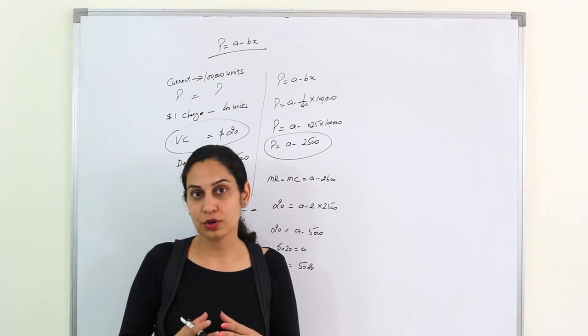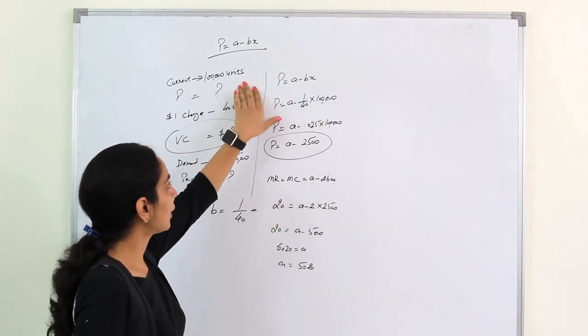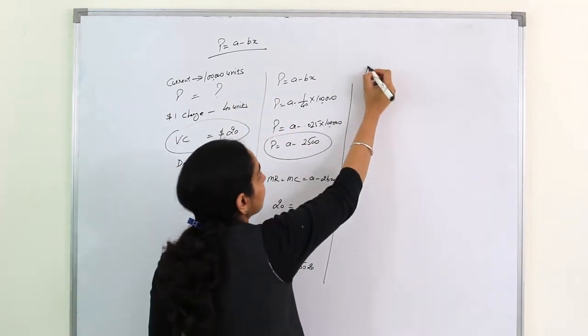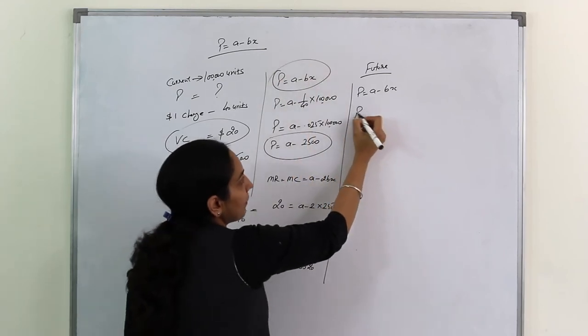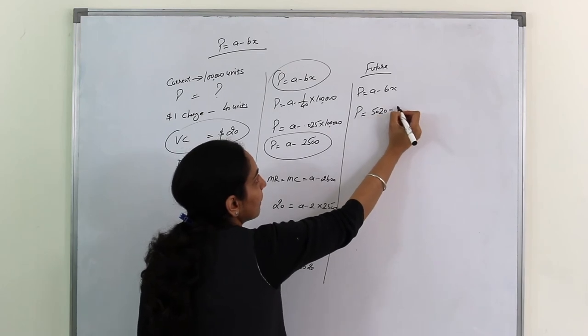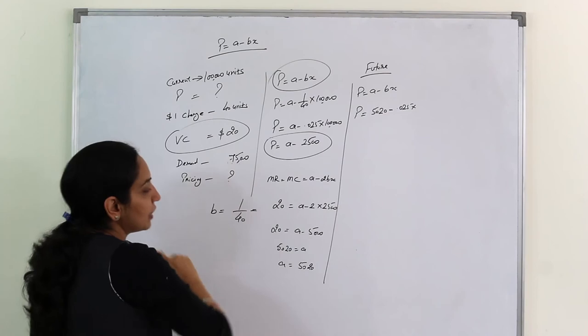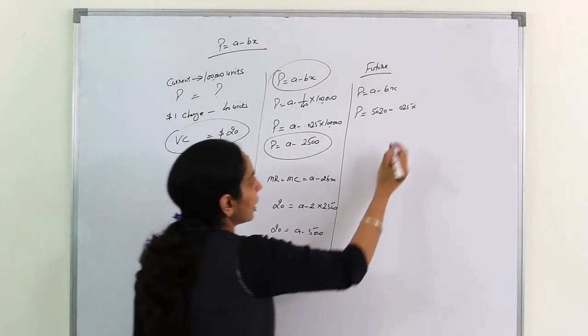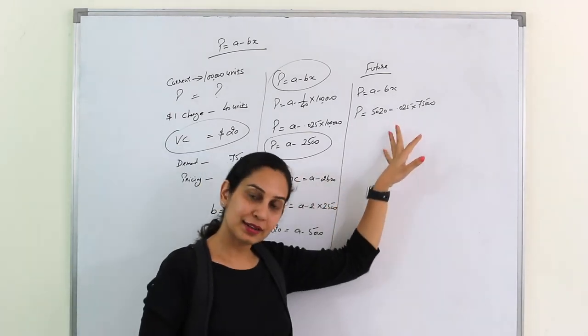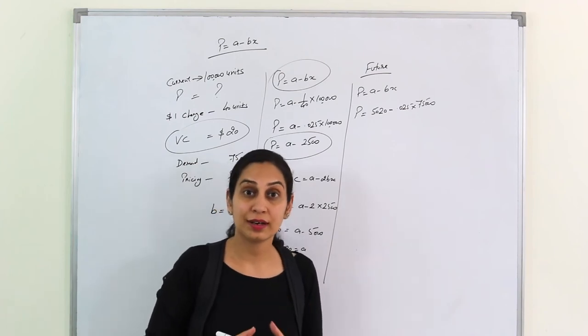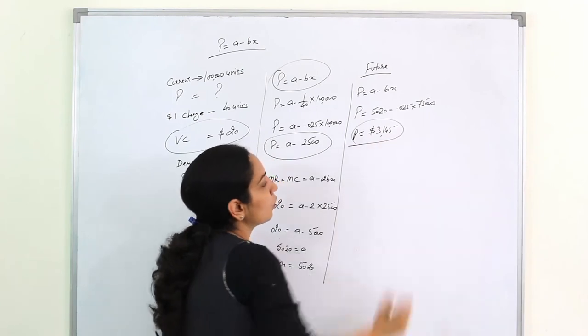You know that A and B are constants. So when you calculate future demand and supply, A is already there, B is already there, and they will remain same. Now we calculate future pricing. Our equation is P equals A minus BX. P we don't know, A we found is 5020, B value is 0.025, and X is 75,000 units which we will produce in future. I am sure we can calculate the value of P. Let's calculate. The value comes to 3145. Now you've got the value of P.